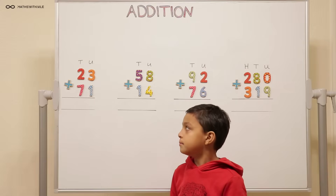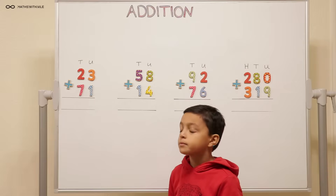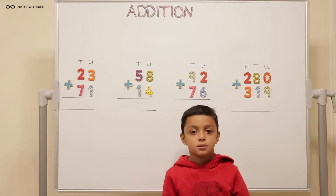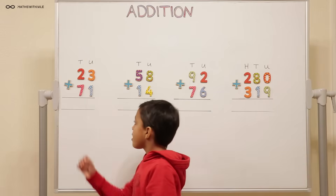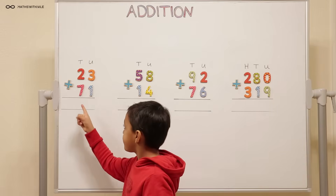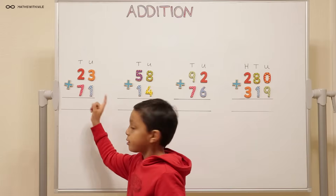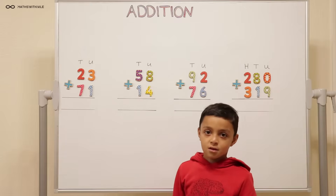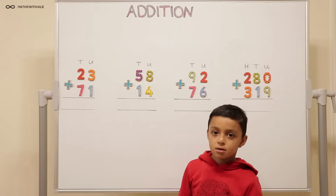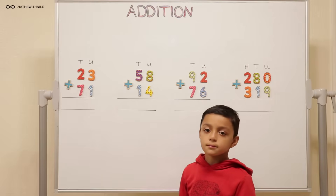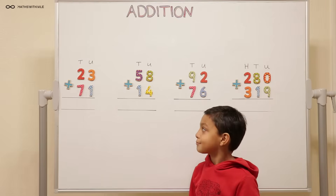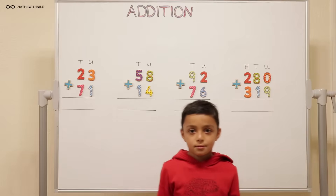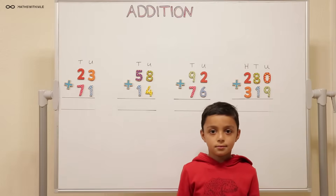When you say two tens, what does that mean? Twenty. Okay, and what about the seventy-one? Seven tens and one one. One one or one unit. Okay, and the seven tens is equal to? Seventy. Because seven lots of ten is equal to seventy.